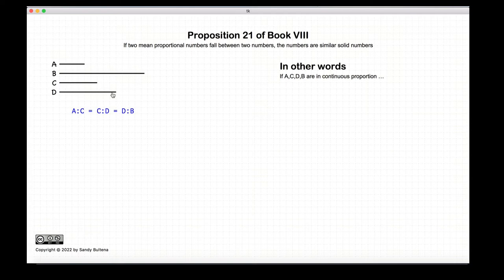Proposition 21 states that if we have four numbers that are in continuous proportion, in other words, a to c is equal to c to d is equal to d to b, then a and b are not only solid numbers, but they are similar solid numbers. In other words, the sides are proportional.